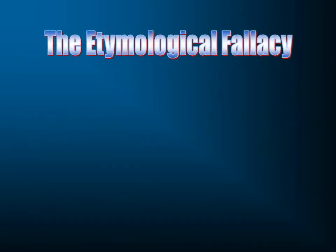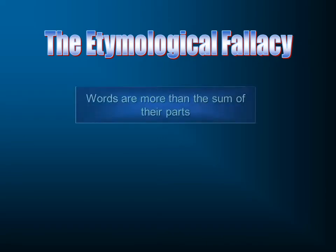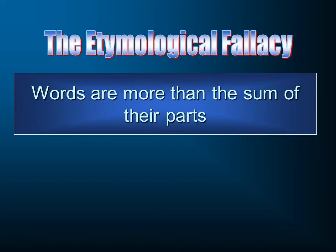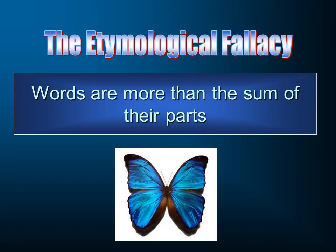There's also what we call the etymological fallacy. When we speak of etymology, that's how the word came to be. Words are more than just the sum of their parts or the history of those words. For example, a butterfly has nothing to do with flies or with butter — and yet here are two parts of the word joined together to make one word with an independent meaning.